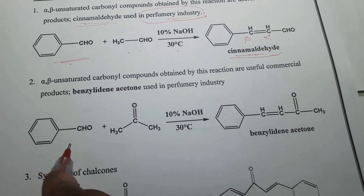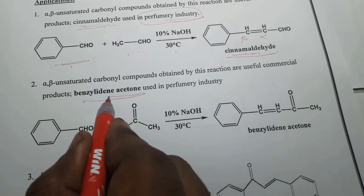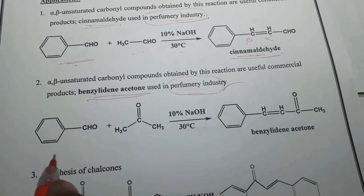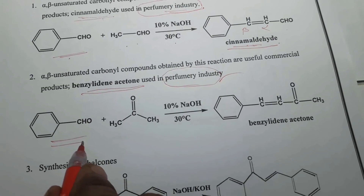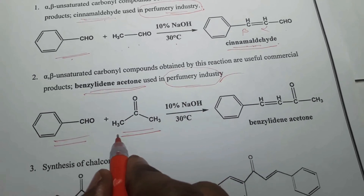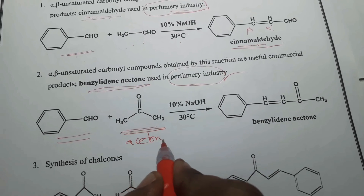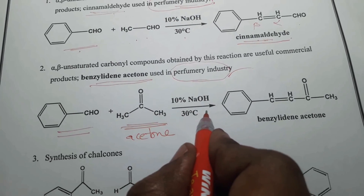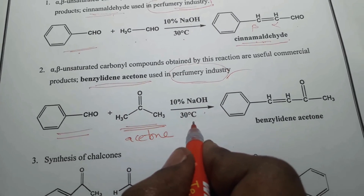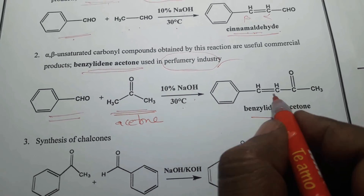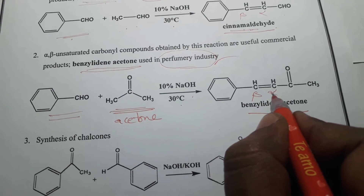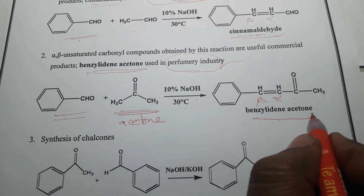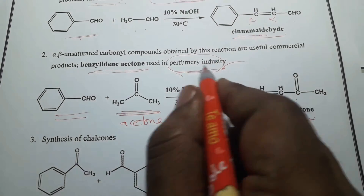Similarly, benzylidene acetone can be produced this way, which also has importance in the perfume industry. Here the aromatic aldehyde benzaldehyde reacts with the aliphatic ketone acetone. By Claisen-Schmidt condensation in the presence of a weak base at low temperature, it gives benzylidene acetone — an alpha-beta unsaturated ketone compound with importance in the perfume industry.